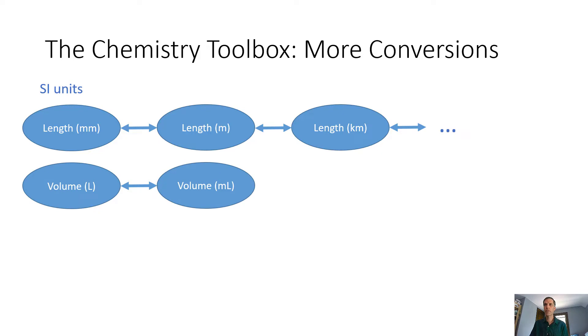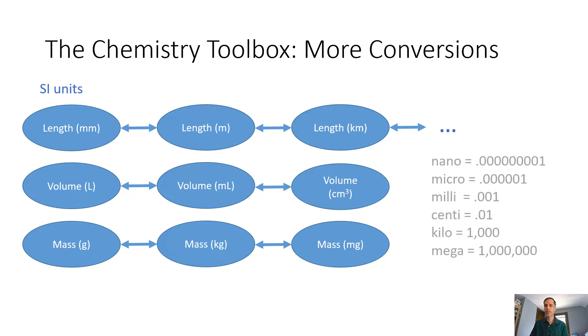The same is true in volume. We can convert between liters and milliliters or centimeters cubed - that's the same as one milliliter. If we think about mass, it could be between grams and kilograms or milligrams or whatever. Knowing the different relationships, like a thousand millimeters in one meter or a millimeter is 0.001 meters, will be really helpful for you. These conversions are always available for you to use in any problem.